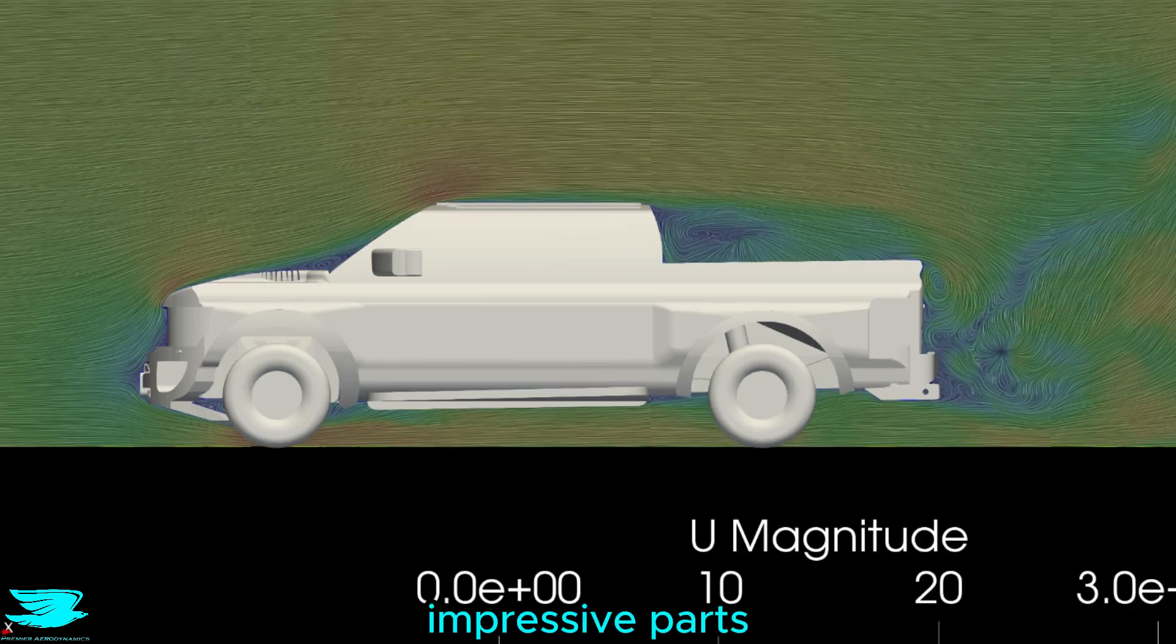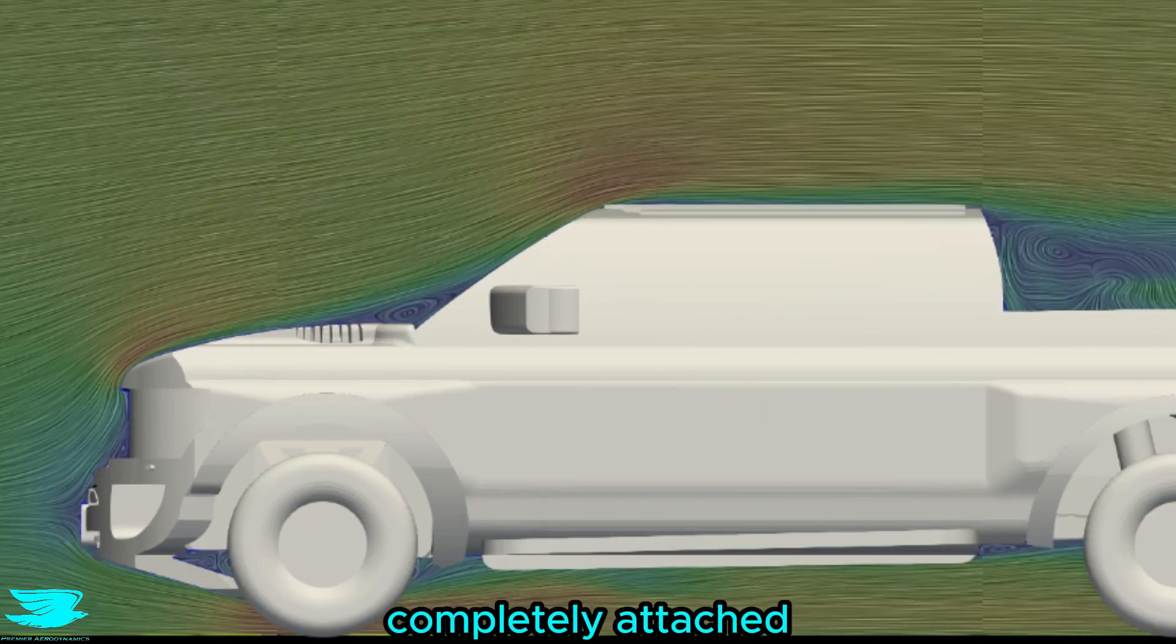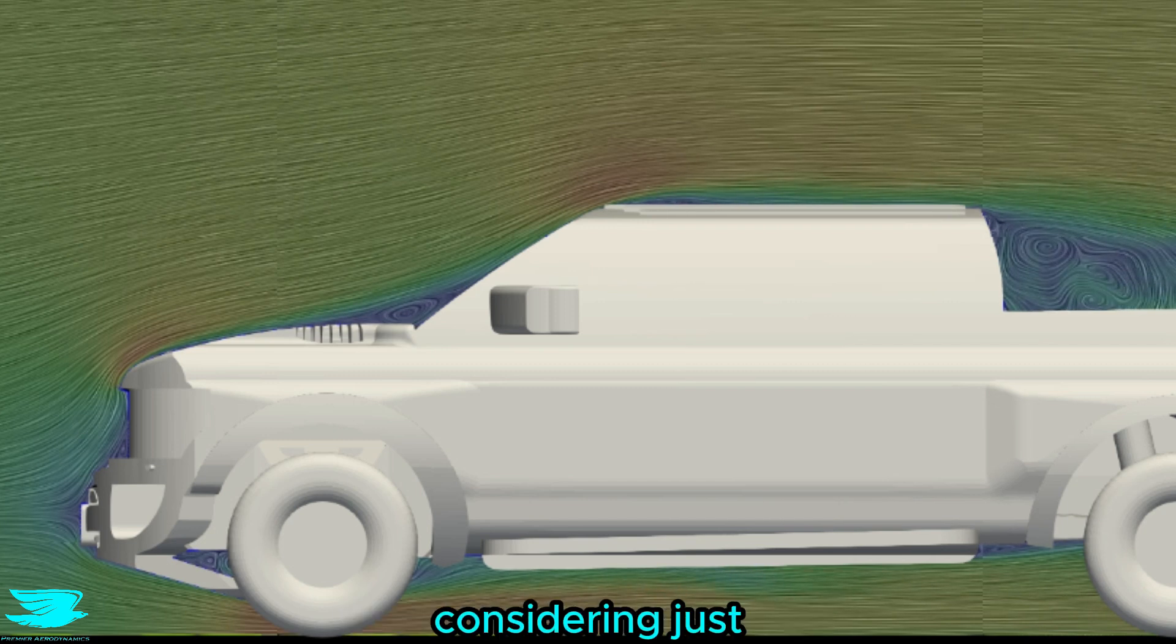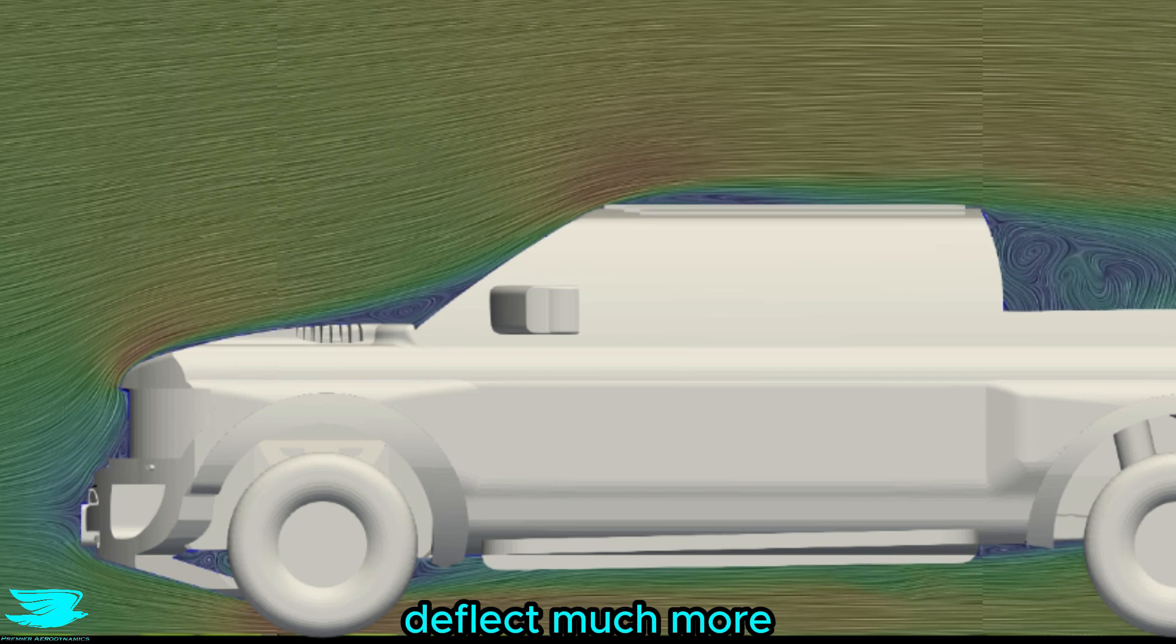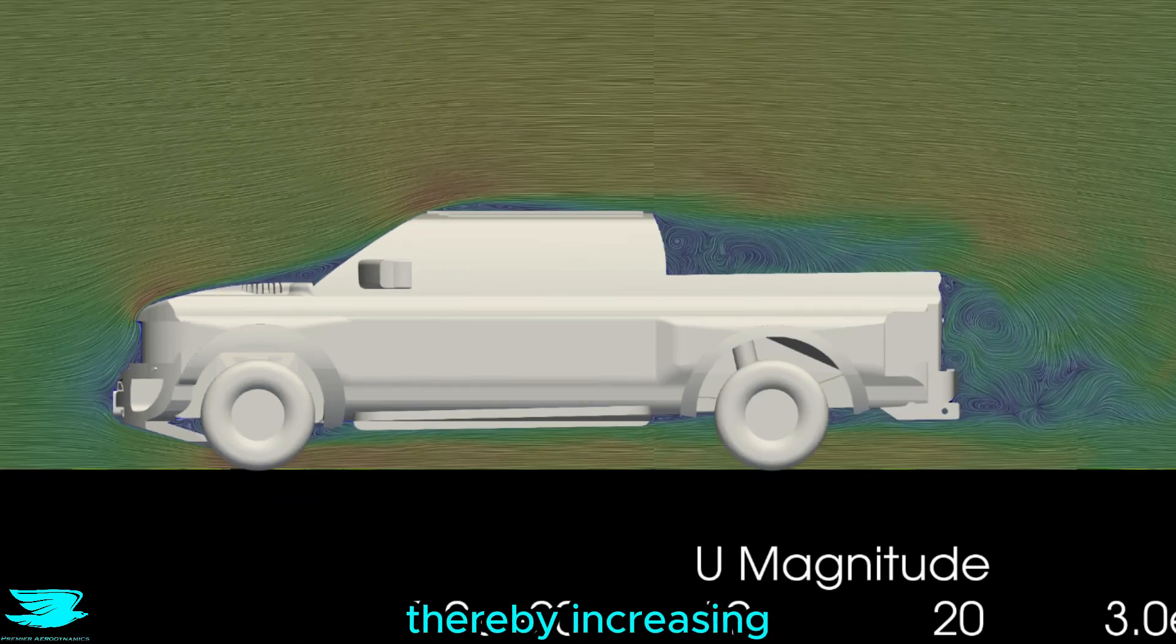But now we get to some impressive parts. Over the roof, the flow is completely attached, which is a little surprising considering just how blunt the front of the Raptor is. Usually you'd expect the flow to deflect much more and separate, thereby increasing the drag, but it doesn't.